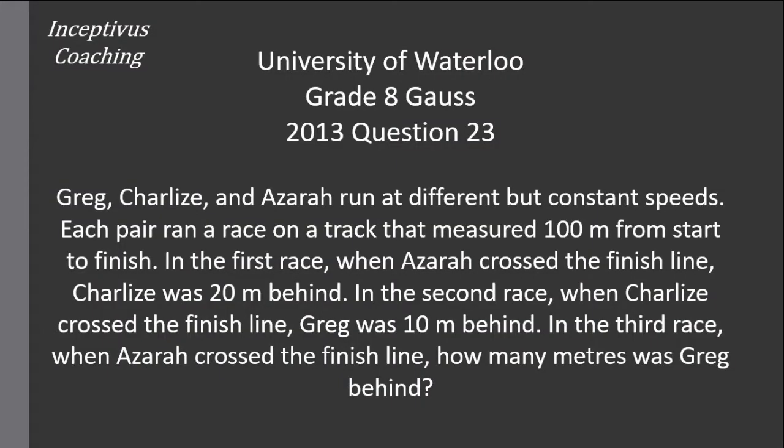This is question number 23 from year 2013, and it asks that Greg, Charlize, and Azara run at different but constant speeds. Each pair ran a race on a track that measured 100 meters from start to finish.